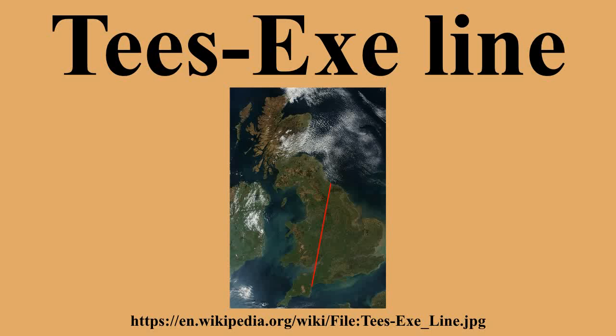To the south and east of this line, the landscape, whilst not always flat, is certainly lower and is characterized by flat-lying, gently tilted or folded sedimentary rocks. North and west of this line are older, generally harder rocks, including igneous and metamorphic rocks and the Paleozoic and Precambrian sandstones and limestones, which usually stand out as upland areas.